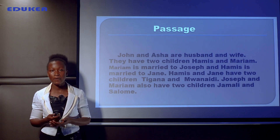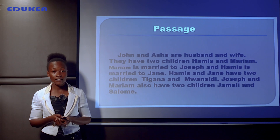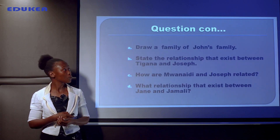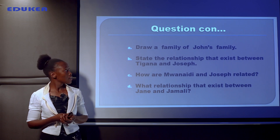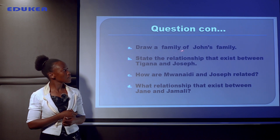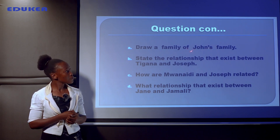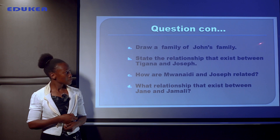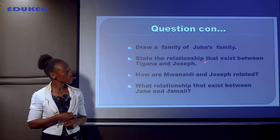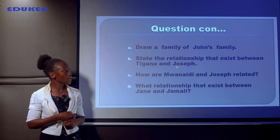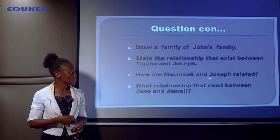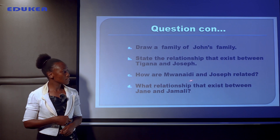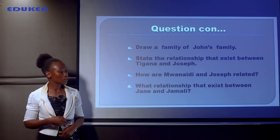From this passage we can answer the questions that follow. There are four questions. Question A: draw a diagram of John's family. Question B: state the relationship that exists between Tigana and Joseph. Question C: how are Mwanaidi and Joseph related? Question D: what relationship exists between Jane and Jamali?